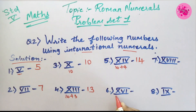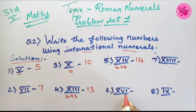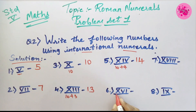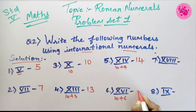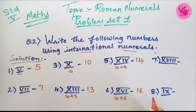Number 6: The Roman numeral XVI is given. X is the symbol of 10 and VI is the symbol of 6. That means 10 plus 6, so we get the answer 16.